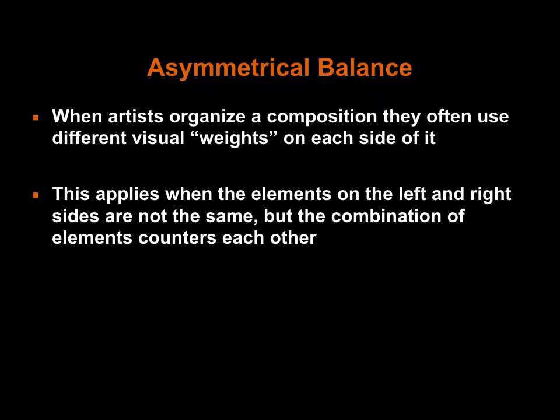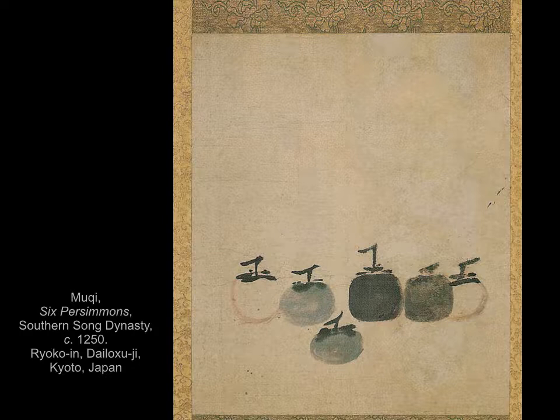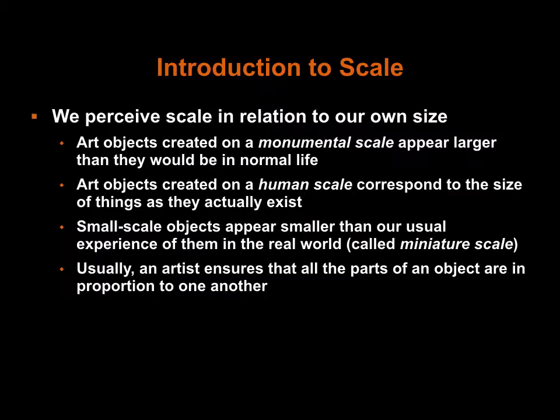In direct contrast to symmetrical balance, asymmetrical balance is when artists distribute the visual weight of the image unequally, often placing more elements on one side of the image than the other, or adding more detail to one side. For example, in this image there are six persimmons portrayed, but they are not arranged symmetrically. Instead, the asymmetrical balance allows us to focus on the persimmons more individually, considering their subtle differences and unique qualities.